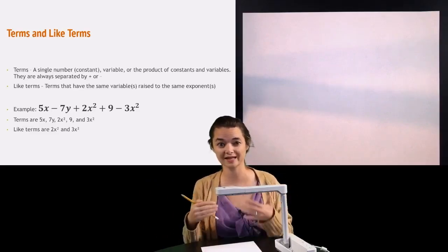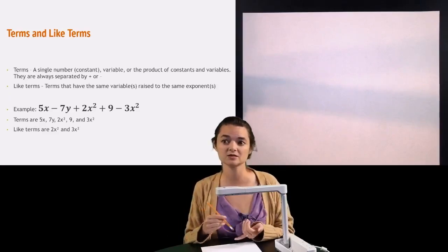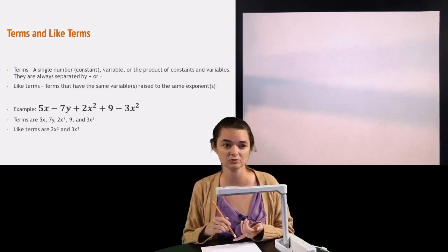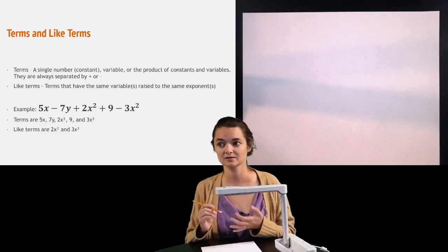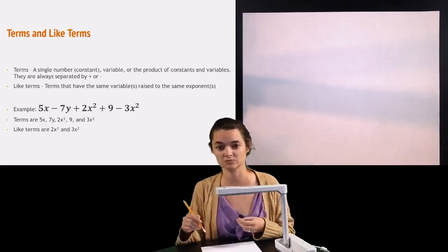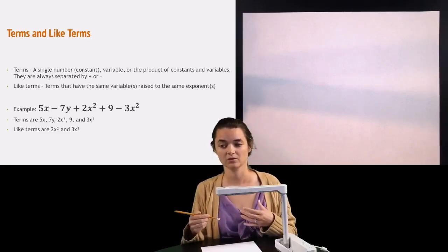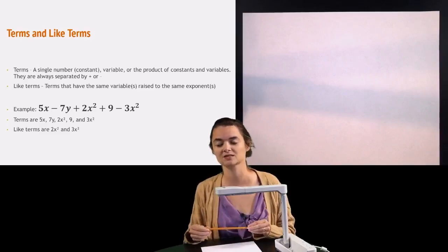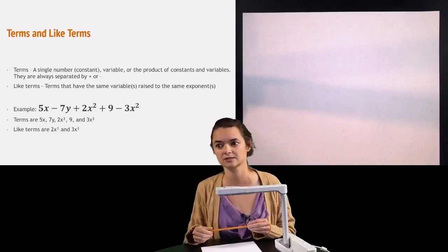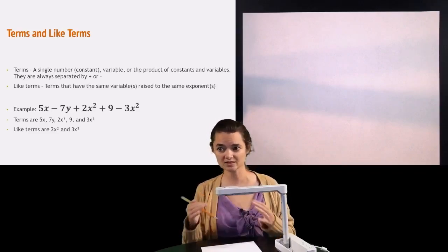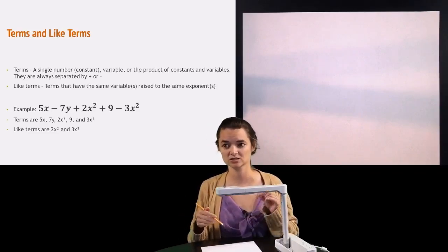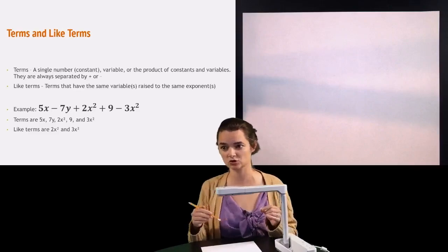When I talk about like terms, like terms are terms that have the same variable or variables and they are raised to the exact same exponent or exponents. So I have an example down here, I have 5x minus 7y plus 2x squared plus 9 minus 3x squared, lots of things going on there, so the terms are always separated by addition or subtraction.